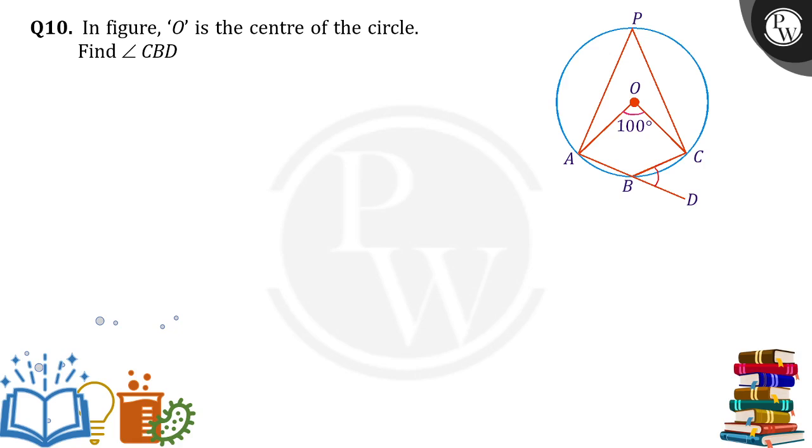First, we need to find angle ABC. How we can do that? We need to take the reflex of AOC. It was given angle AOC is equal to 100. So reflex of angle AOC is how much? 360 minus 100 degrees, that is equal to 260 degrees.